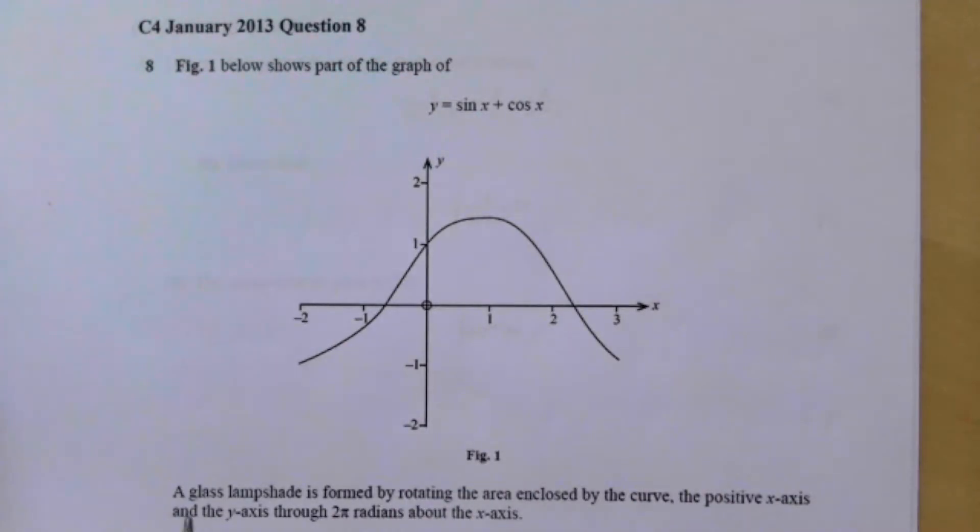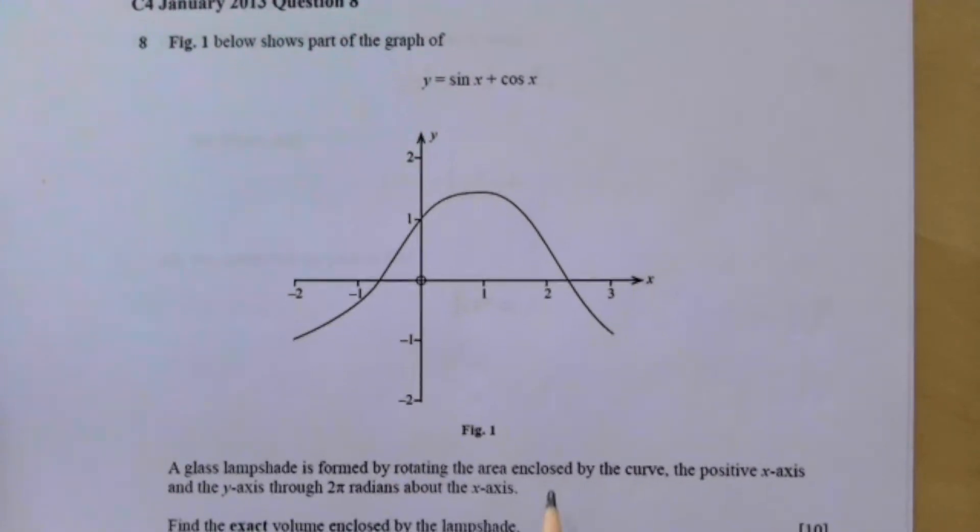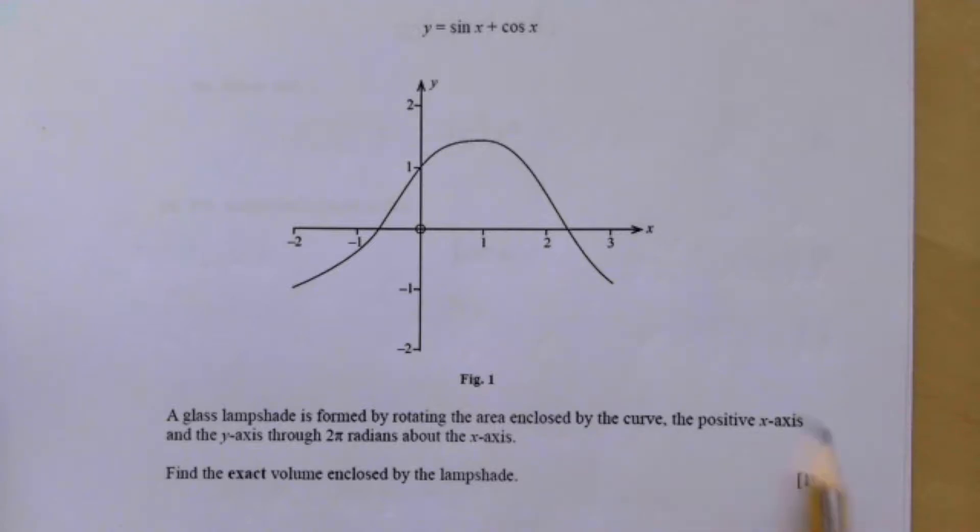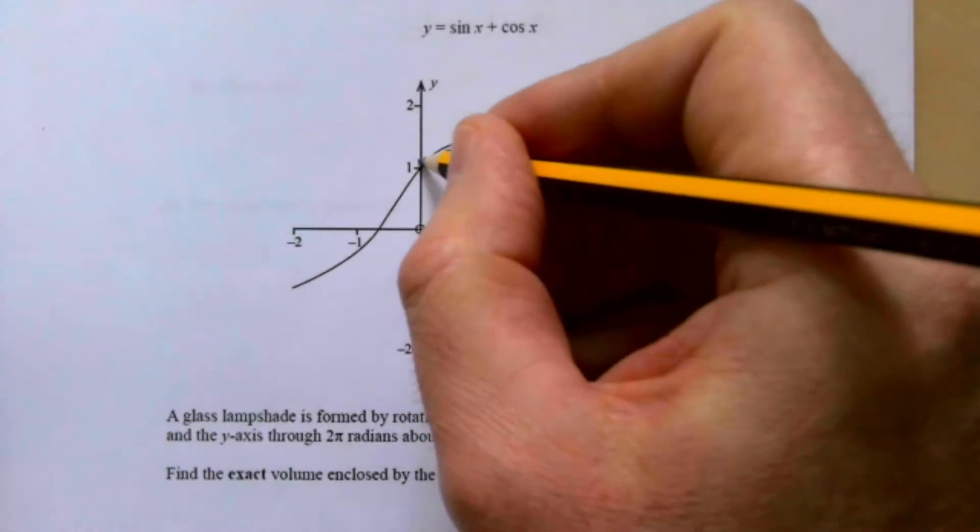This is the graph here. A glass lampshade is formed by rotating the area enclosed by the curve, the positive x-axis, and the y-axis through 2π radians about the x-axis. So it's this bit here.